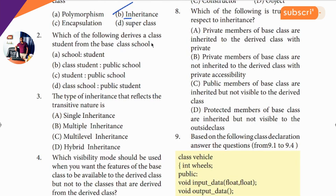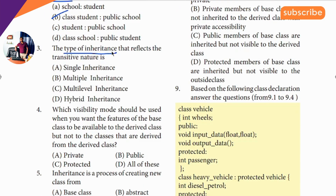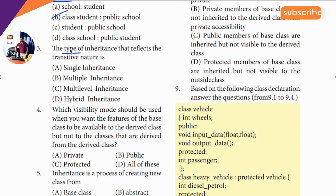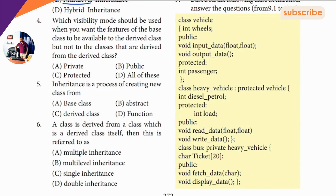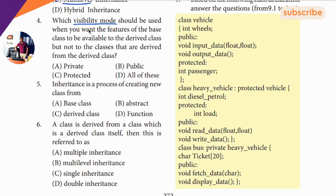Second question: type of inheritance — you can type a writing class. Fourth question is visibility mode: visible, private, making an identity. Visibility mode — private and public.